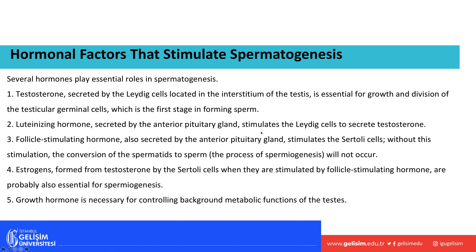Many hormones play a role in spermatogenesis. Testosterone is secreted by Leydig cells in the interstitium of the testis and is an important growth factor for germinal cell division. Luteinizing hormone, secreted by the anterior pituitary, stimulates the Leydig cells to secrete testosterone. Follicle-stimulating hormone, also from the anterior pituitary, stimulates Sertoli cells, allowing conversion of spermatids to sperm — a process called spermiogenesis.